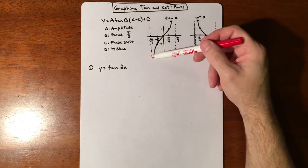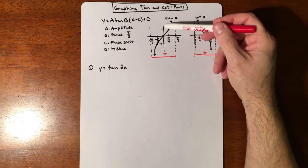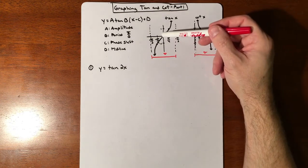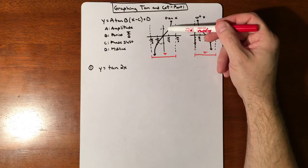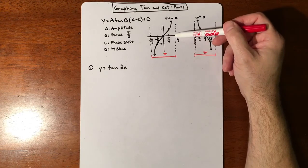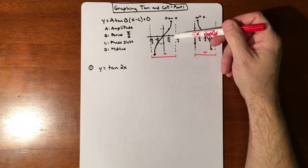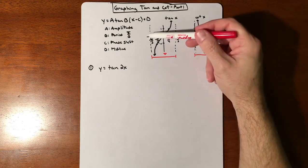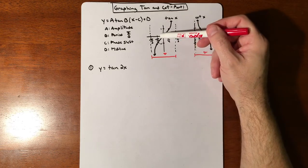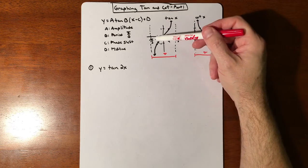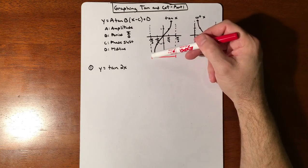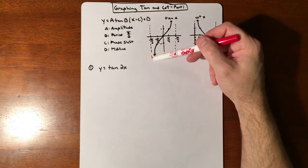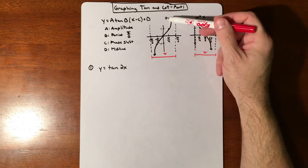So first, just to look at the graph: tangent of 0 is 0, tangent of pi over 4 is 1, and when you get to tangent of pi over 2 you get an asymptote. On the other side, tangent of negative pi over 4 is negative 1, and then tangent of negative pi over 2 is another asymptote. So tangent always looks like that.